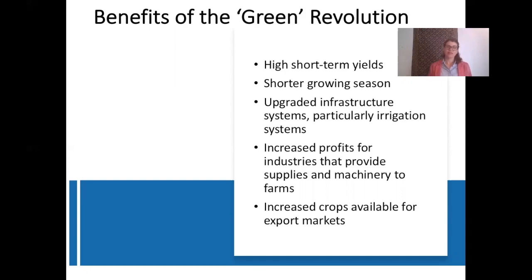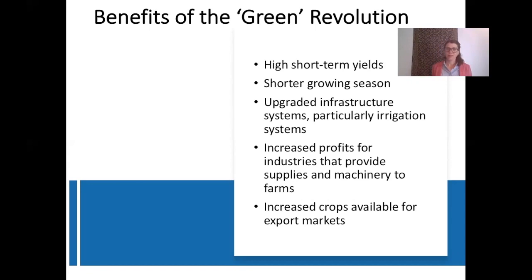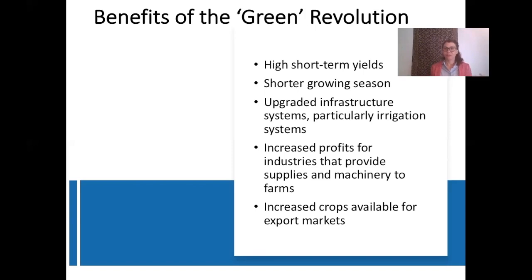In addition, we saw the development of high-yield varieties, which meant there were only a few species. To give you an idea, in India before the Green Revolution there were some 30,000 varieties of rice, but today there are only around 10 varieties, considered to be the most high-yielding types. By having this increased crop homogeneity, these crops were unfortunately more prone to disease and pests, because there were fewer varieties to actually fight these diseases off. So in order to protect these limited varieties, pesticide use also grew.